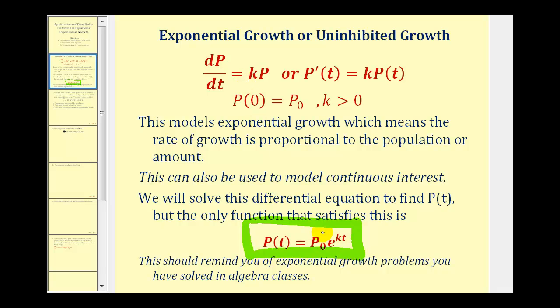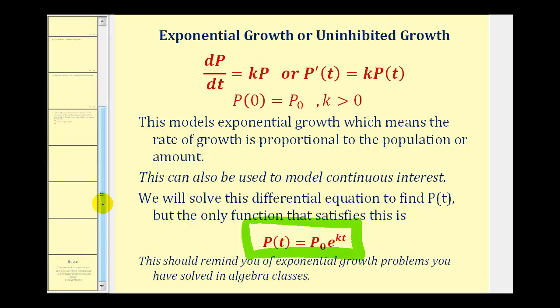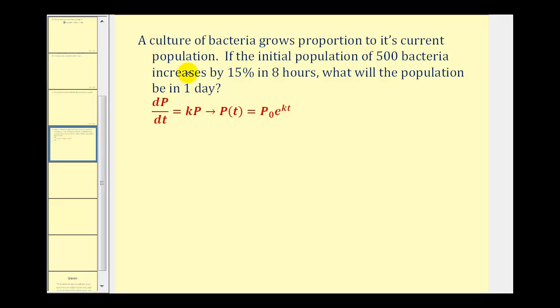So now that we know this, we're going to use this exponential function to solve a second problem. A culture of bacteria grows proportional to its current population. Knowing this, we can use the model dp/dt equals k times P of t.